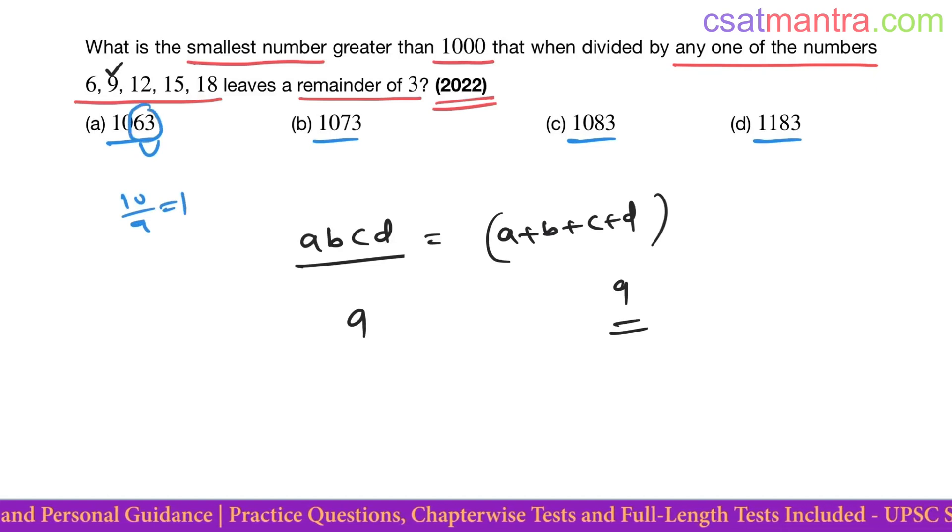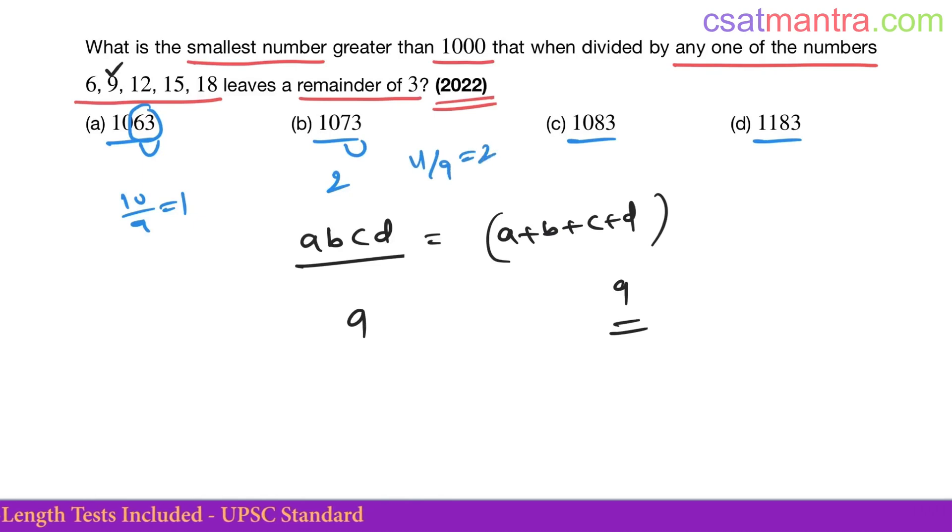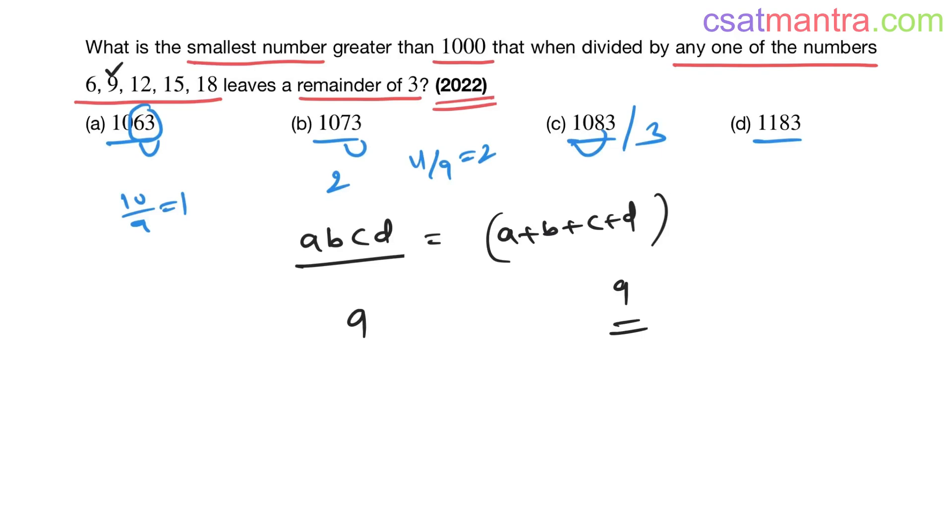The remainder is the remaining part after the sum of digits. Option (b): 7 + 3 = 10, no, 1 + 1 = 2, remainder is 2. Option (c): 8 + 1 = 9, discard. The remainder is 3. See, 9 + 3 = 12. 12 when divided by 9, remainder is 3.